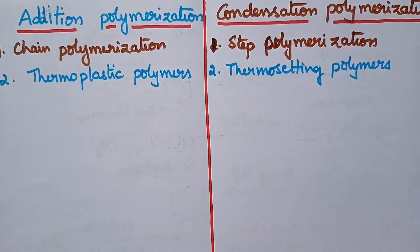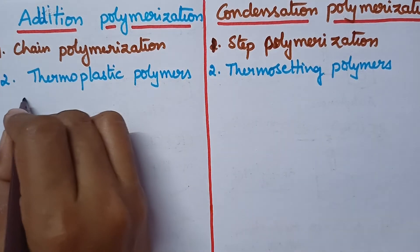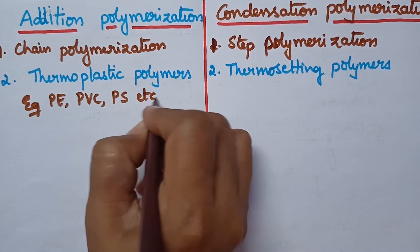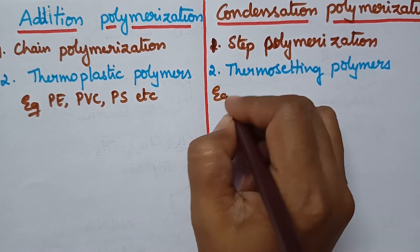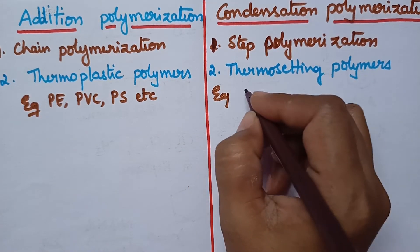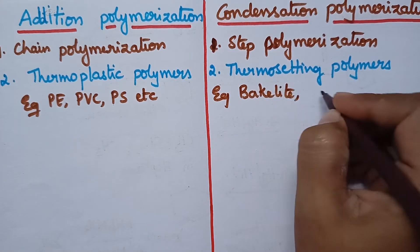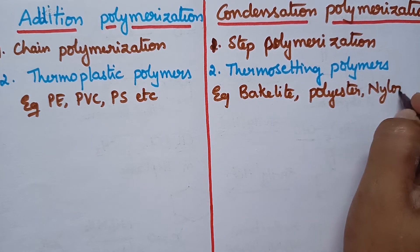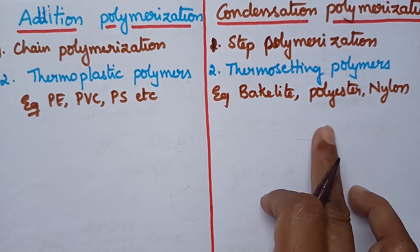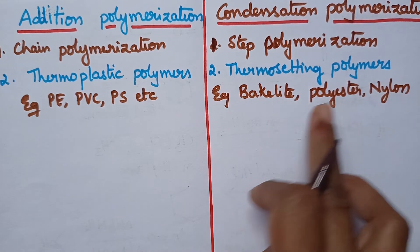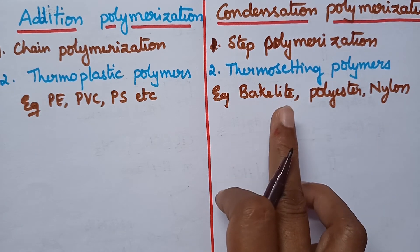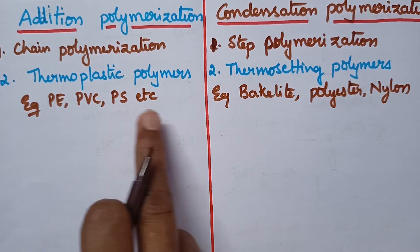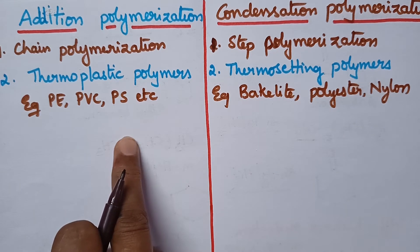Good examples of thermoplastics include polythene, polyvinyl chloride (PVC), and polystyrene. Good examples of thermosetting polymers include bakelite, polyester, and nylon. So bakelite, polyester, and nylon can be prepared through condensation polymerization, whereas polythene, PVC, and polystyrene can be prepared through addition polymerization.